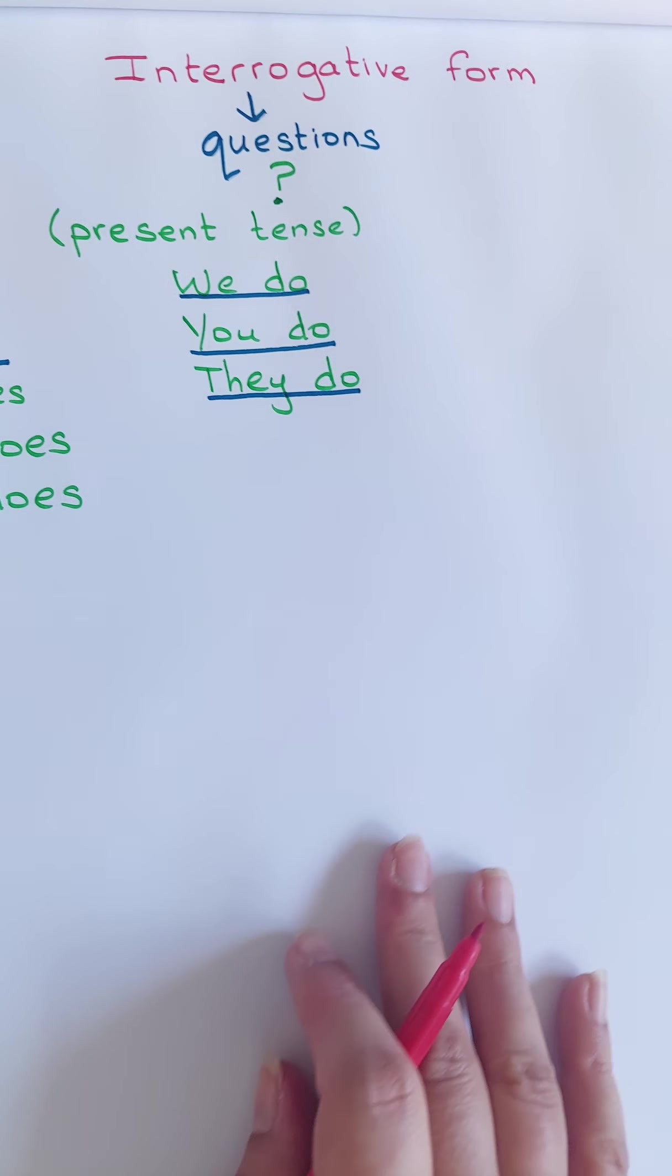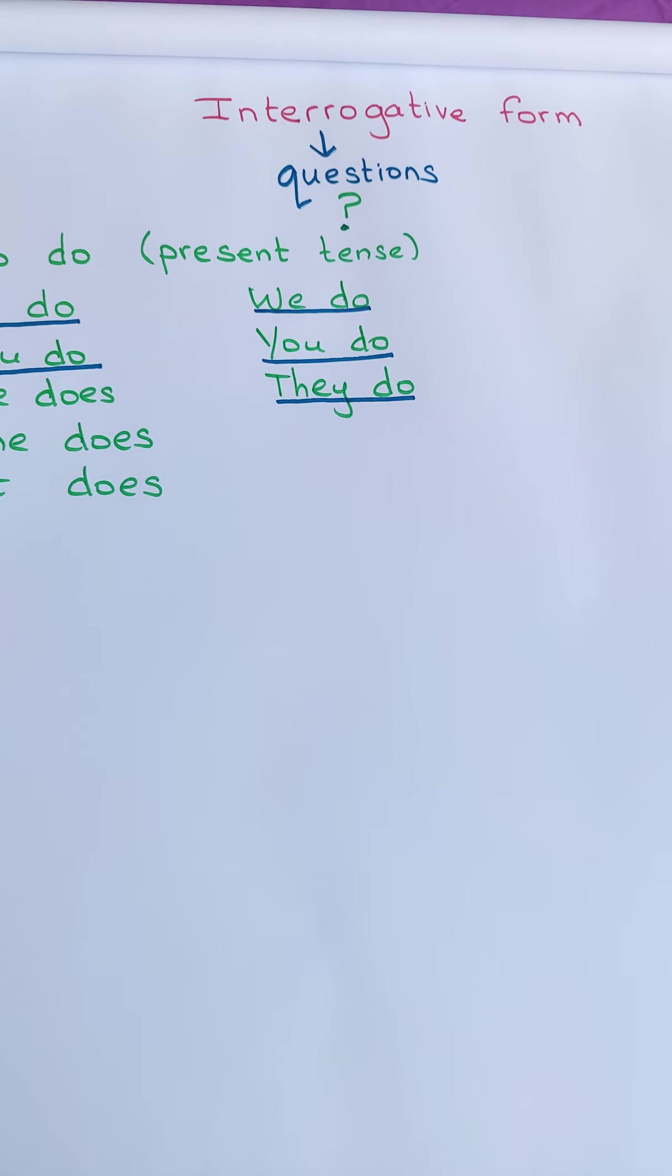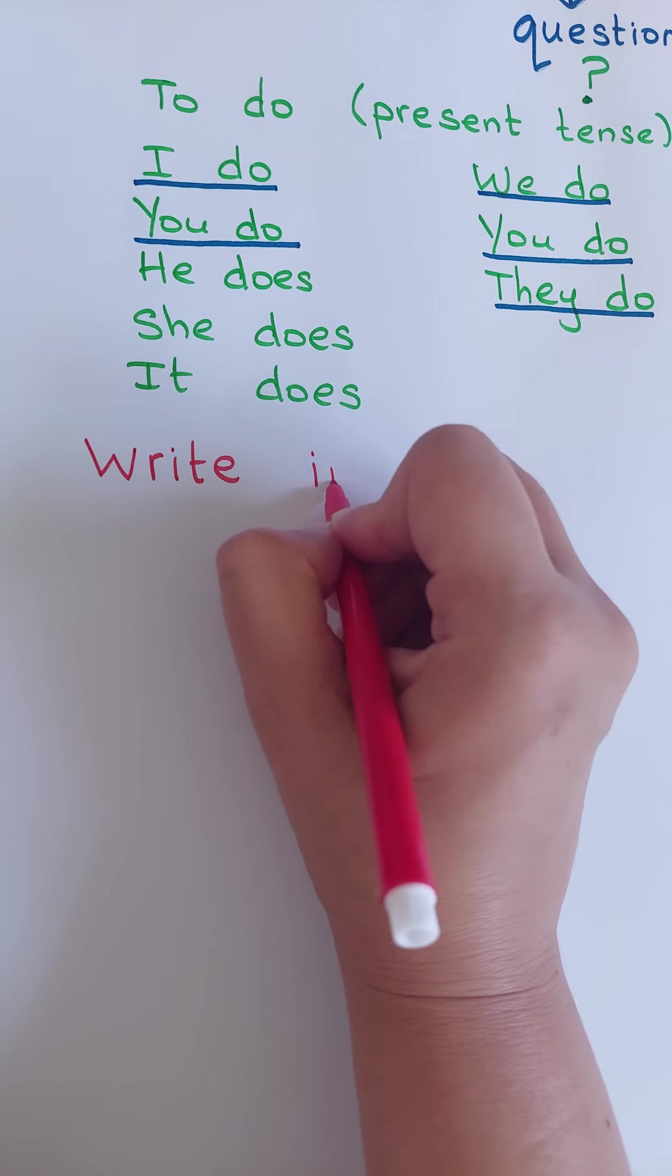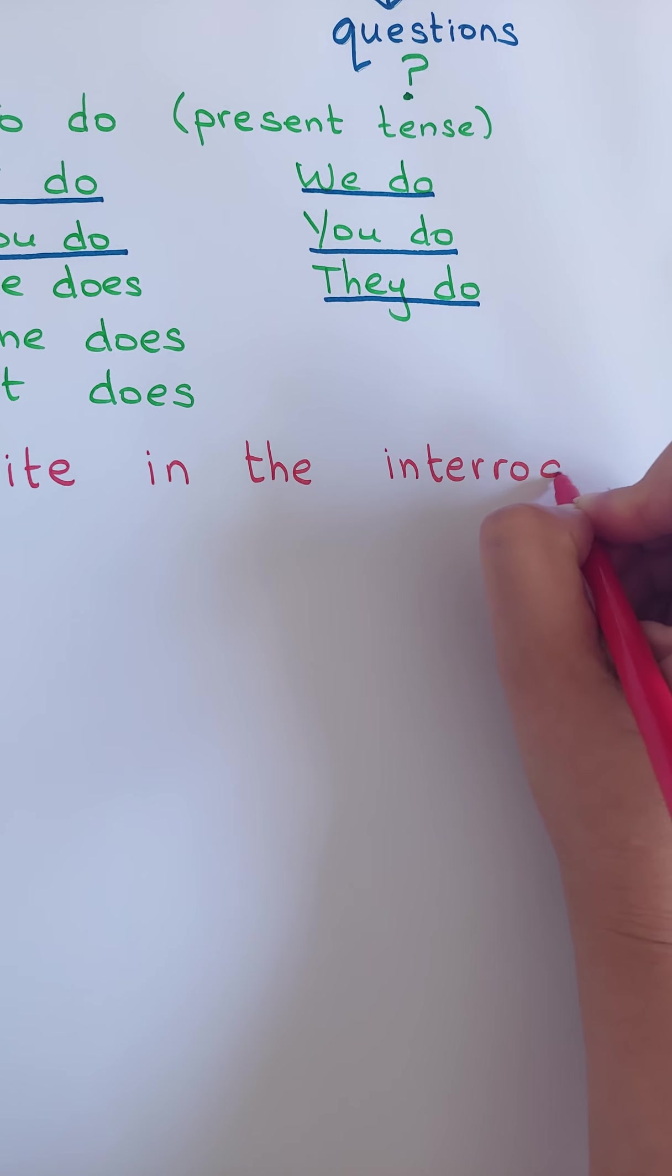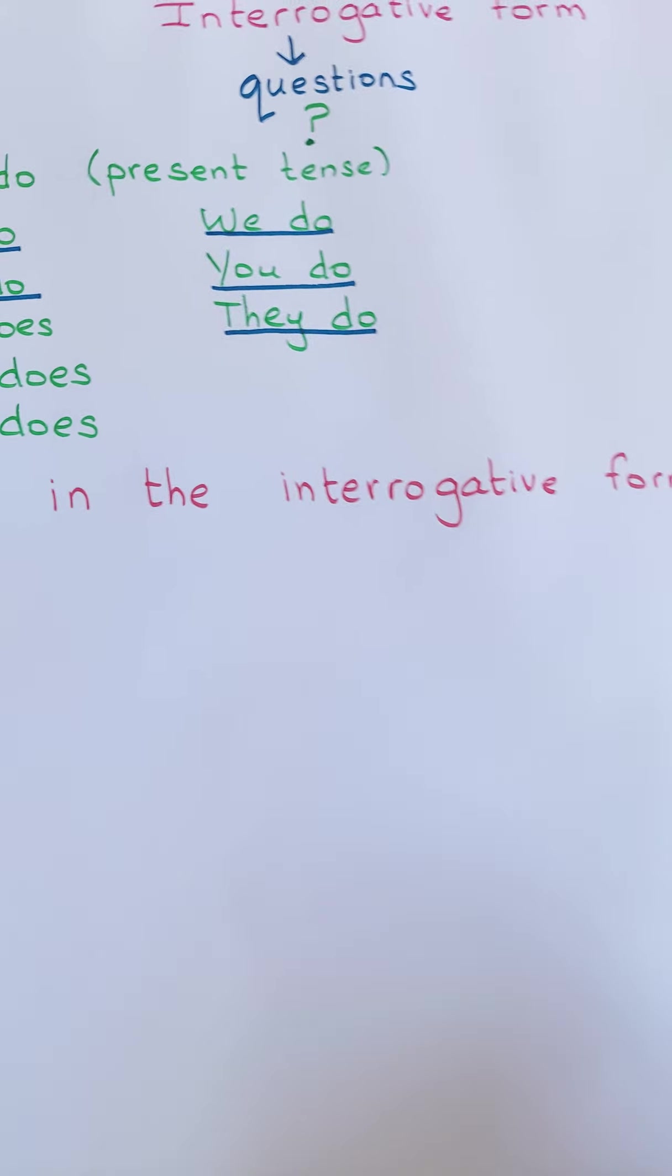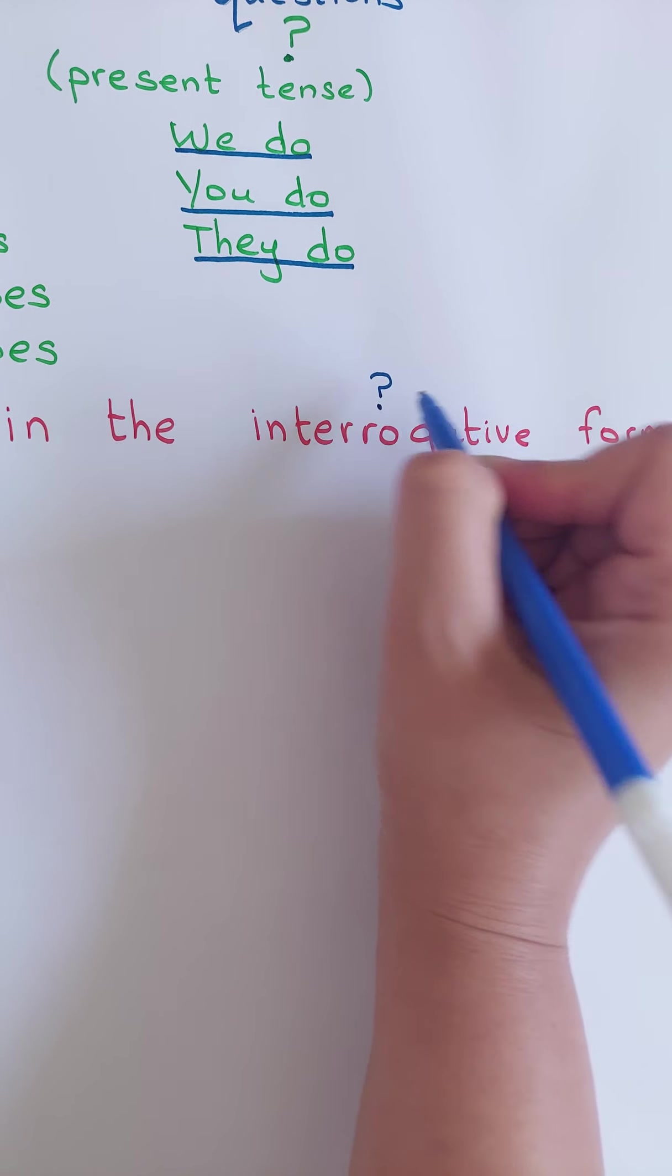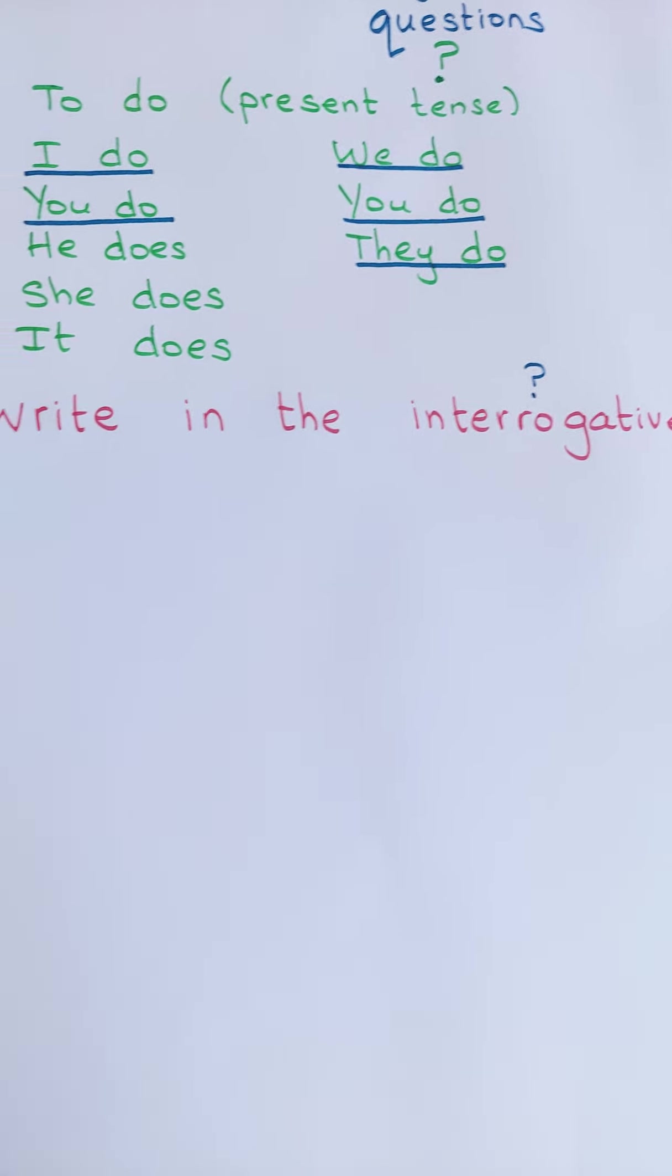D'habitude, la question pour le interrogative form, pour les examens, on va te dire write, il faut savoir bien lire la question. Write in the interrogative form. Toi, dès que tu vois ça, pour les examens, pour un devoir, quand tu vois ce mot interrogative là, tu mets un question mark là en haut. Comme ça, tu ne vas pas oublier de mettre son point d'interrogation.